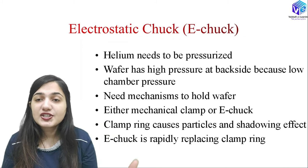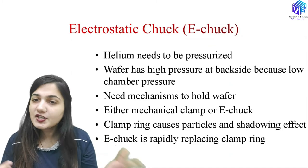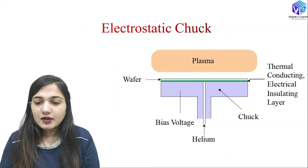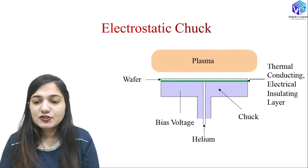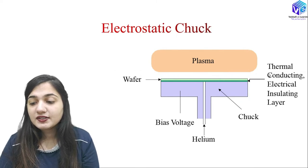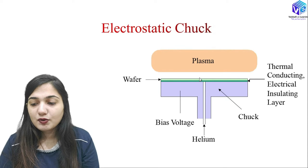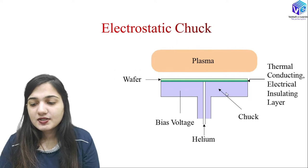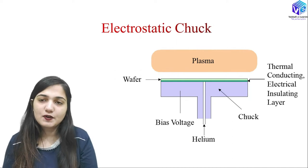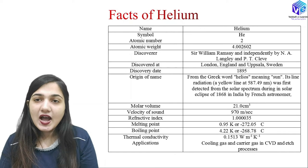With an electrostatic chuck, there is no mechanical support and therefore no shadowed region. The electrostatic chuck has a bias voltage supplied to it, along with a thermally conducting, electrically insulating layer present over the wafer surface.